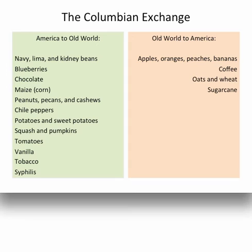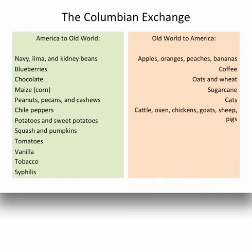Also, a large number of domesticated animals did not exist in America before Columbus: cats, cattle, oxen, chickens, goats, sheep, and pigs. These farm animals had a tremendous impact on the lives of Indians. First, they were often very disruptive to the Indians' fields — Europeans' cattle, goats, or pigs would run wild and trample the natives' crops, a common grievance in the early years of settlement. Later, Indians began to cultivate these animals, with some becoming workers on cattle ranches, so this had a big impact on their lives as well.